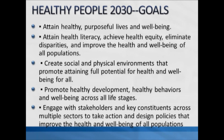The new Healthy People 2030 report recommends the following goals for the United States: attain healthy, purposeful lives and well-being; attain health literacy, achieve health equity, eliminate disparities, and improve the health and well-being of all populations; create social and physical environments that promote attaining full potential for health and well-being; promote healthy development, healthy behaviors, and well-being across all life stages; and engage stakeholders across multiple sectors to design policy that improves health and well-being for all populations.